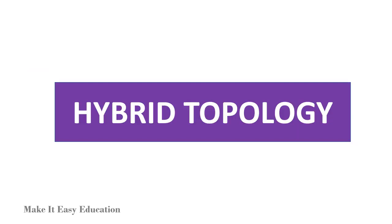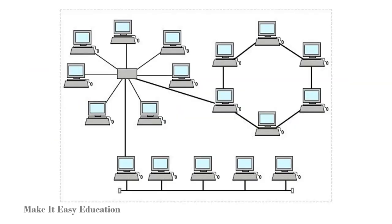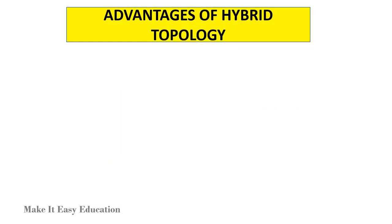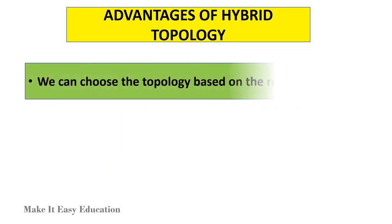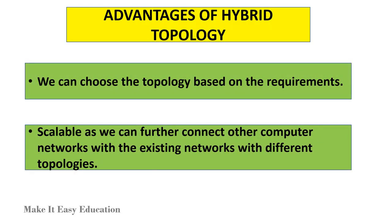Hybrid topology. A combination of two or more topologies is known as hybrid topology. For example, a combination of star, ring, and bus topology is a hybrid topology. Advantages of hybrid topology: We can choose the topology based on the requirements. It is scalable, as we can further connect other computer networks with the existing networks using different topologies.